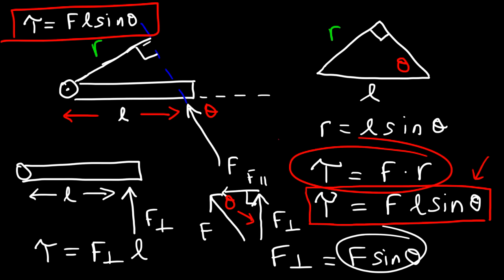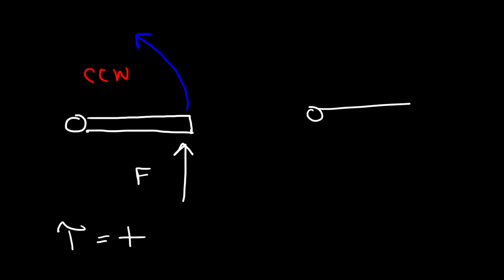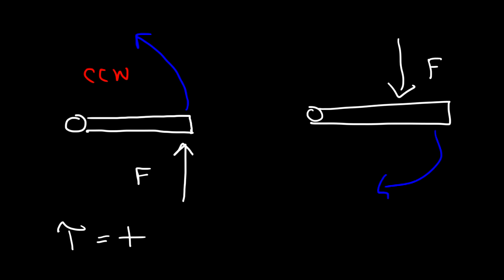Two important sign conventions: whenever a force causes an object to rotate counterclockwise, it creates a positive torque. If a force causes an object to rotate clockwise, it generates a negative torque.